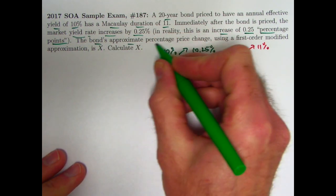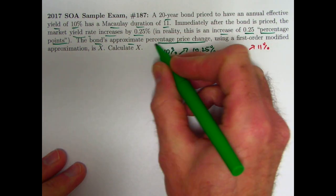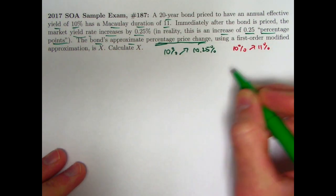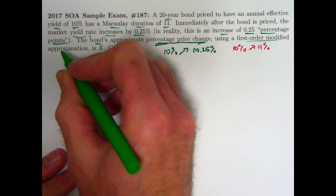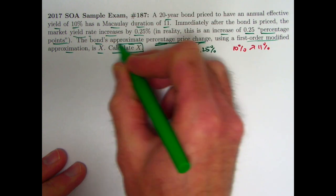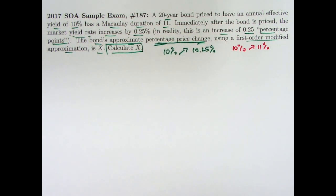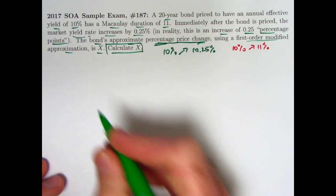The bond's approximate percentage price change, and this is an actual percentage price change, using this first order modified approximation is X, and the goal is to calculate X. So we just use the formula from the last video.